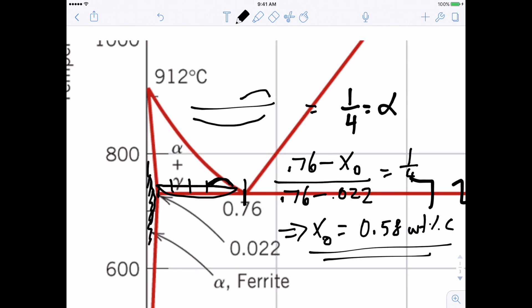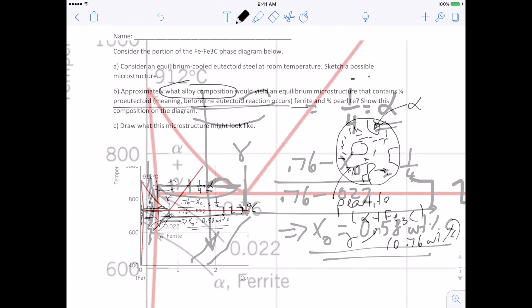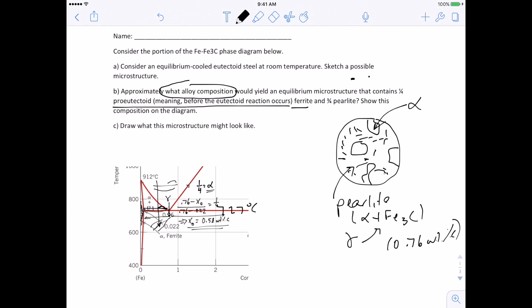So our overall alloy composition is 0.58. And so what happens is a quarter of it forms this proeutectoid ferrite. And then the rest of it ends up with exactly this right composition to go through the perlite transition. And so the rest of it will be gamma, that after it cools on down, it's going to form that perlite mixture. And so that is the solution to this problem.